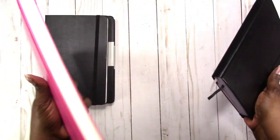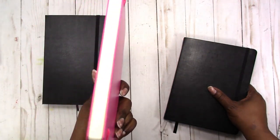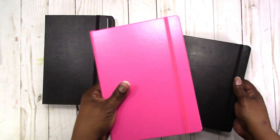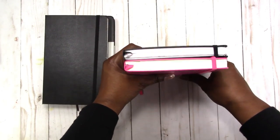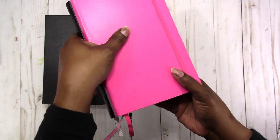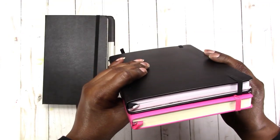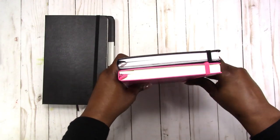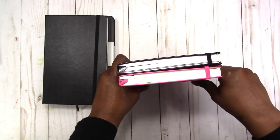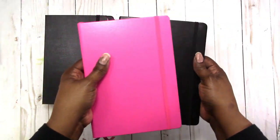Moving on, this is a pink Leuchtturm 1917. As far as the size, it pretty much compares equally to the size of the Michaels journal - it's about a quarter of an inch taller and maybe a quarter of an inch narrower, but they do compare in size.